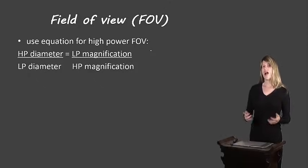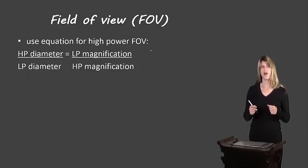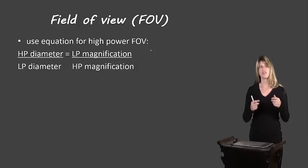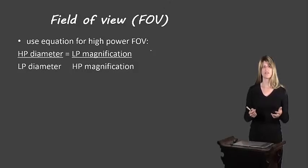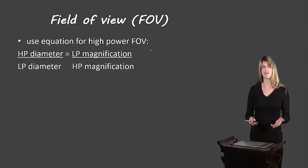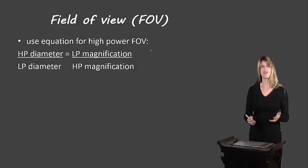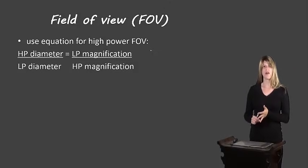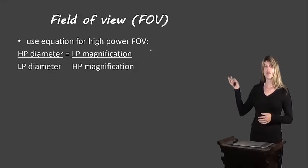For high power, if we put a ruler underneath the microscope, we'll find that typically it's less than 1 millimeter. So we can't really use the ruler to determine the field of view, because it's smaller than our smallest ability to measure. Instead, we need to do some calculations: first find the low power field of view, then find the magnification of the low power and the high power, and then use an equation to determine the field of view for the high power.